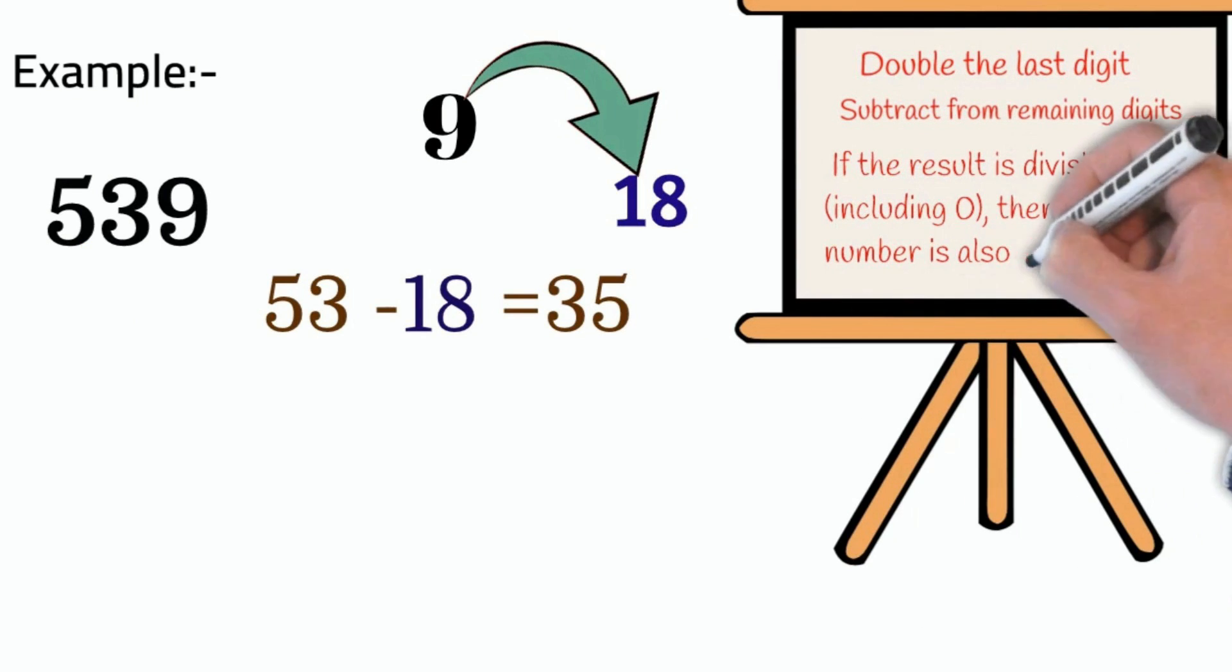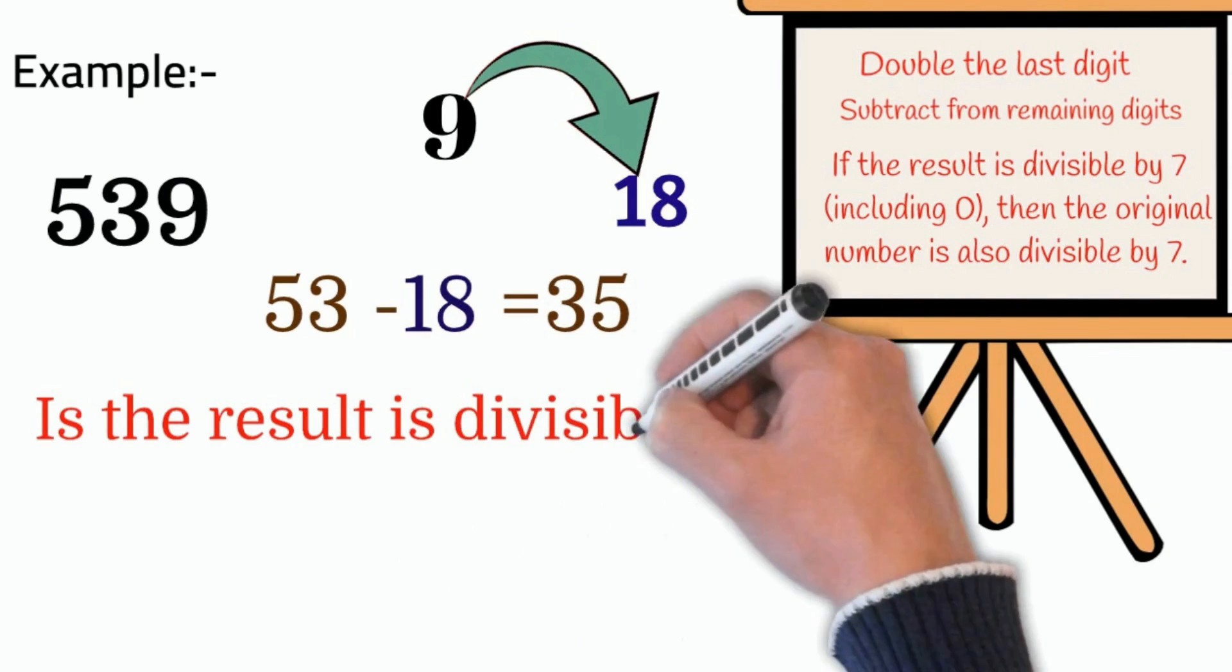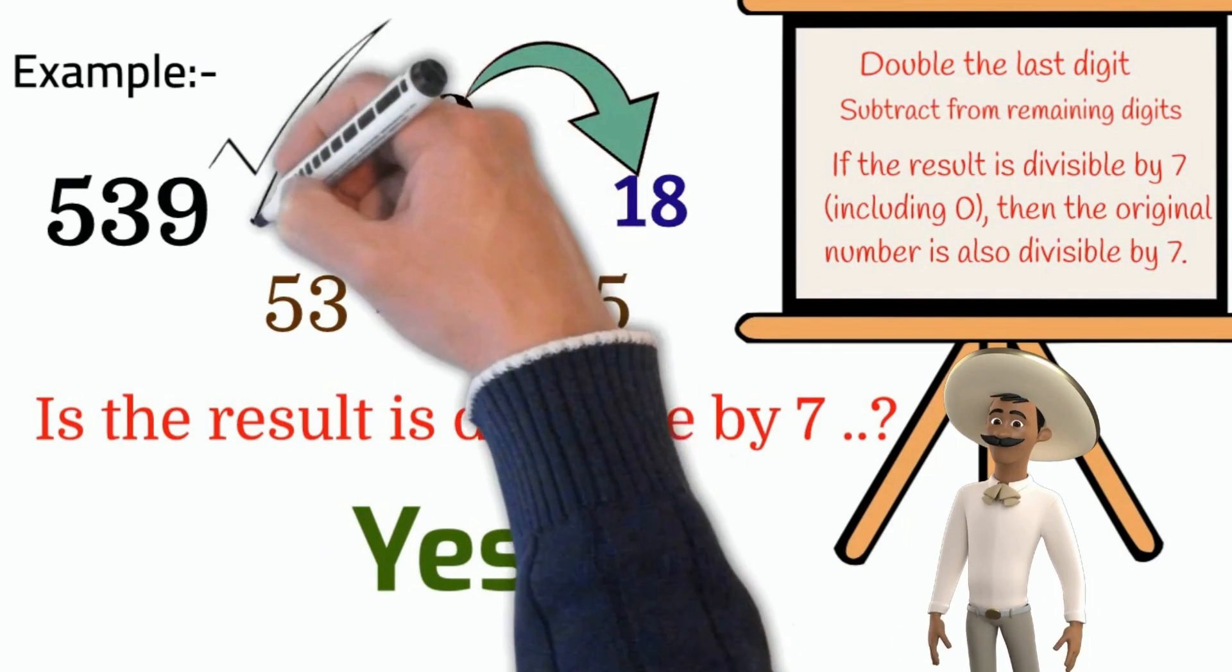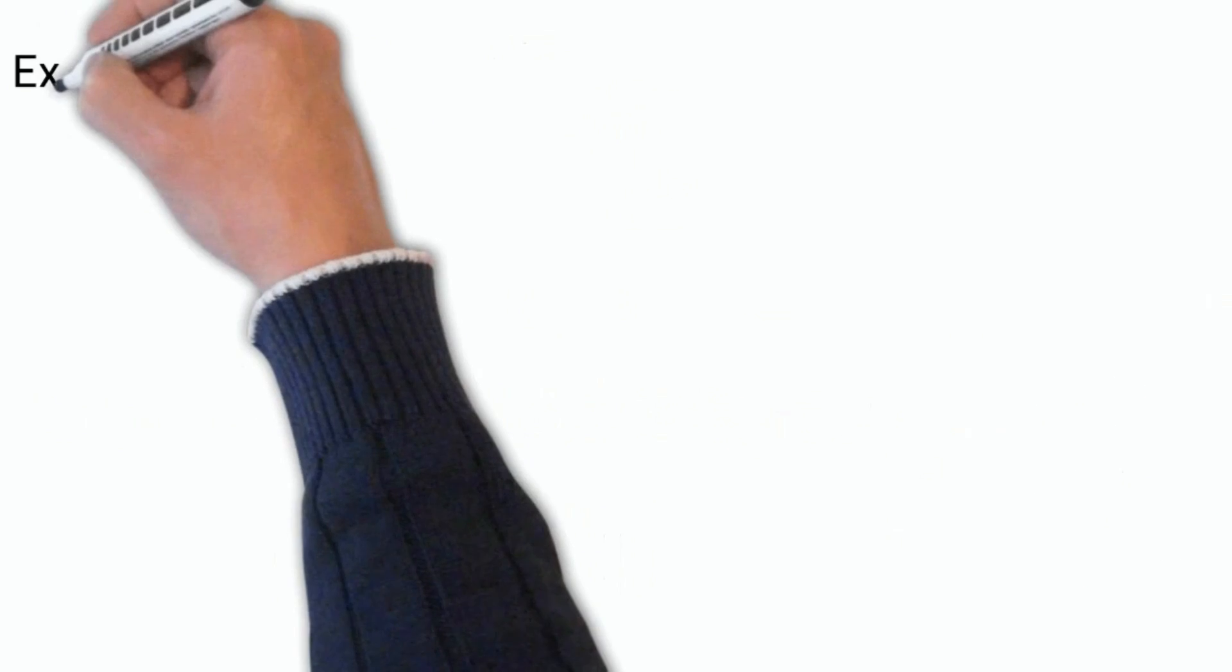Now, check 35 is divisible by seven. Yes, seven into five is 35. So, 539 is divisible by seven. I hope it's clear.